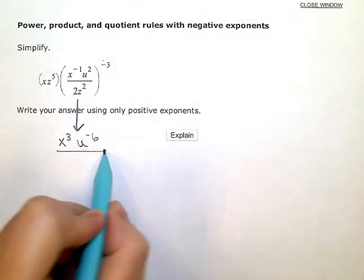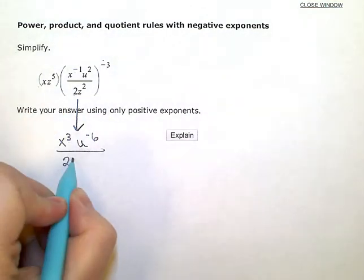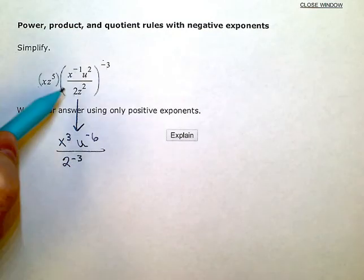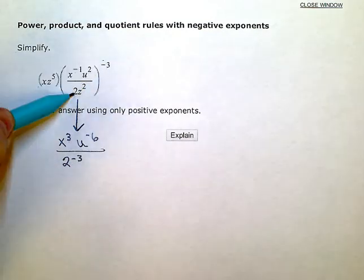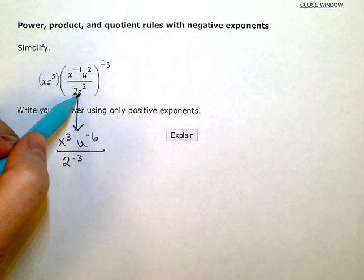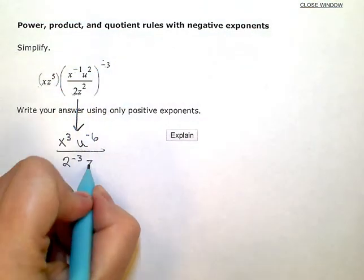In the denominator, I'm going to have 2 to the negative 3, applying this negative 3 to the 2. And then the z is positive 2 times negative 3 or z to the negative 6.